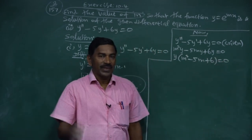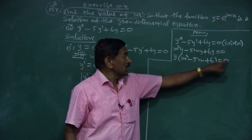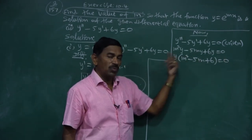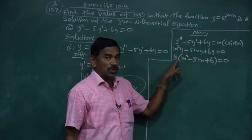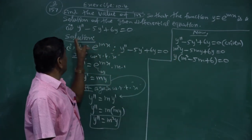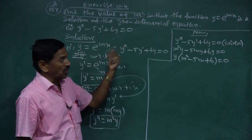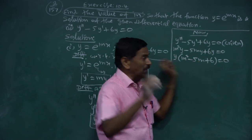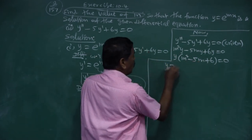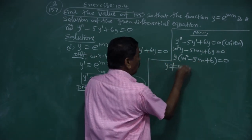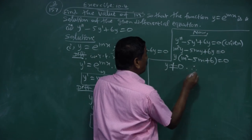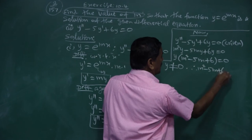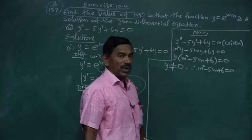Since the product equals zero, either y = 0 or the bracket = 0. But y = e^(mx) ≠ 0. Therefore m² - 5m + 6 = 0. This is a quadratic equation in m.